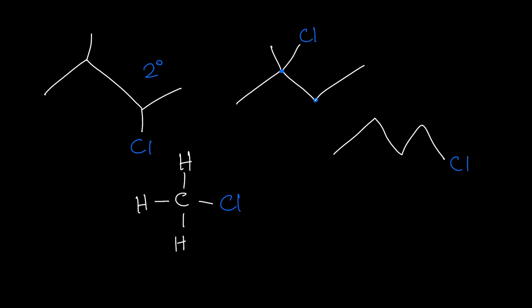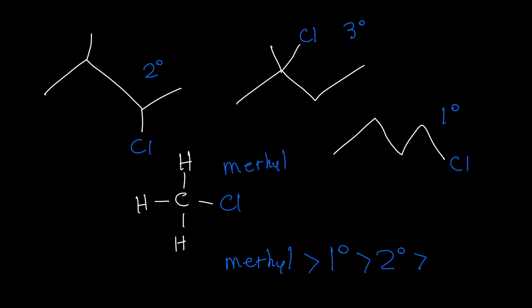The next example is attached to three carbons, so it's a tertiary alkyl halide. On the third one, it's attached to one carbon, so it's a primary. And on the last one, the carbon attached to the chlorine is not attached to any other carbon, so it's a methyl halide. Methyl alkyl halides are better in SN2 reactions than primary alkyl halides, which are better than secondary, and those are better than tertiary. The lower the number of carbons your halogen carbon is attached to, the more likely you'll get an SN2 reaction.